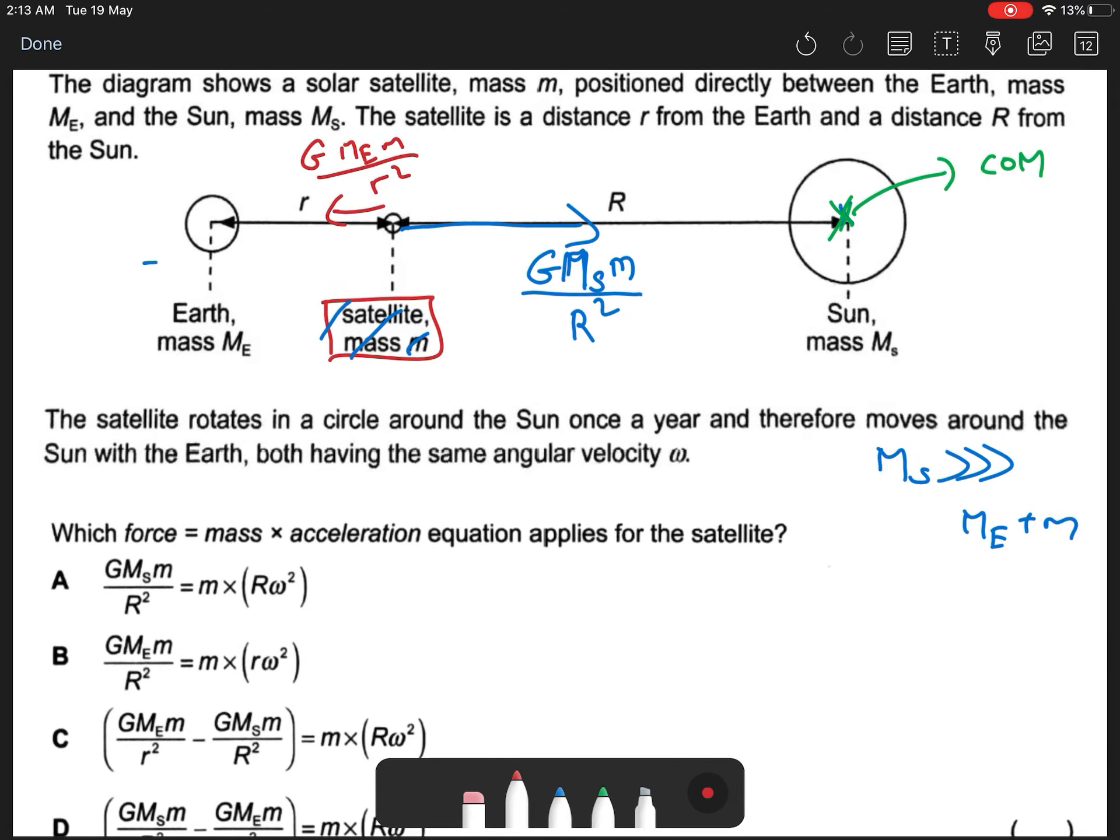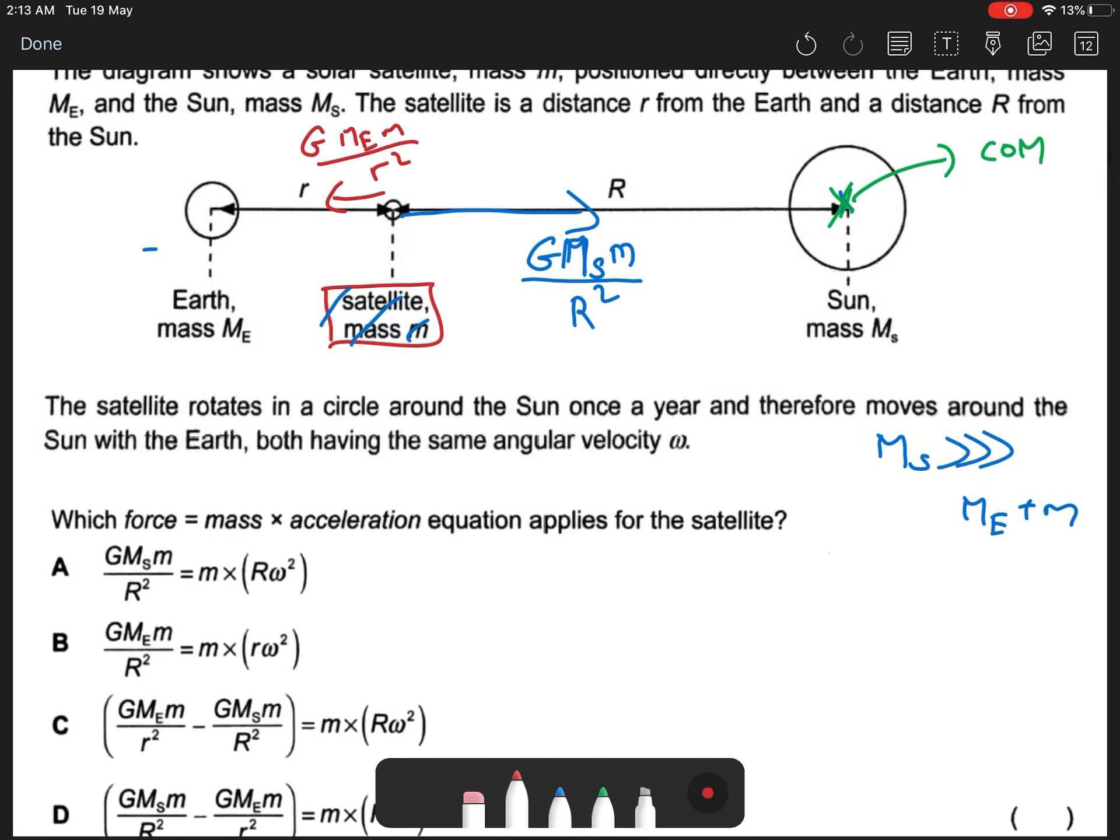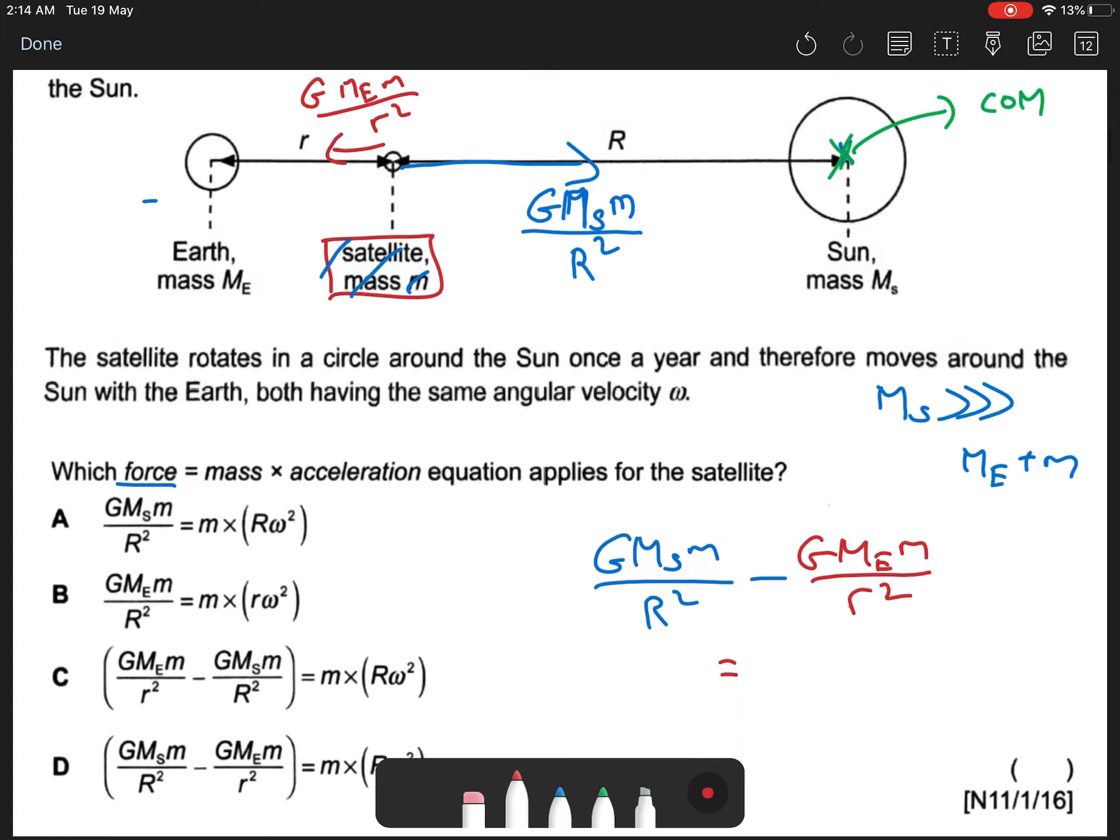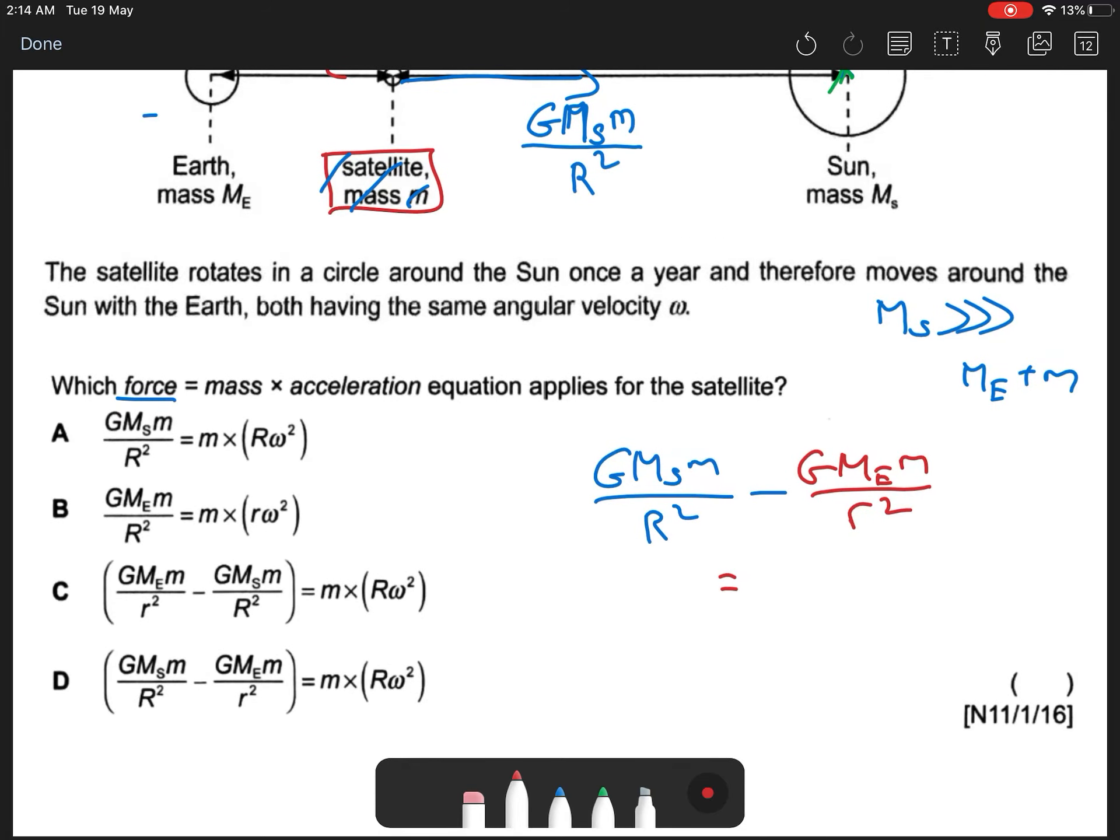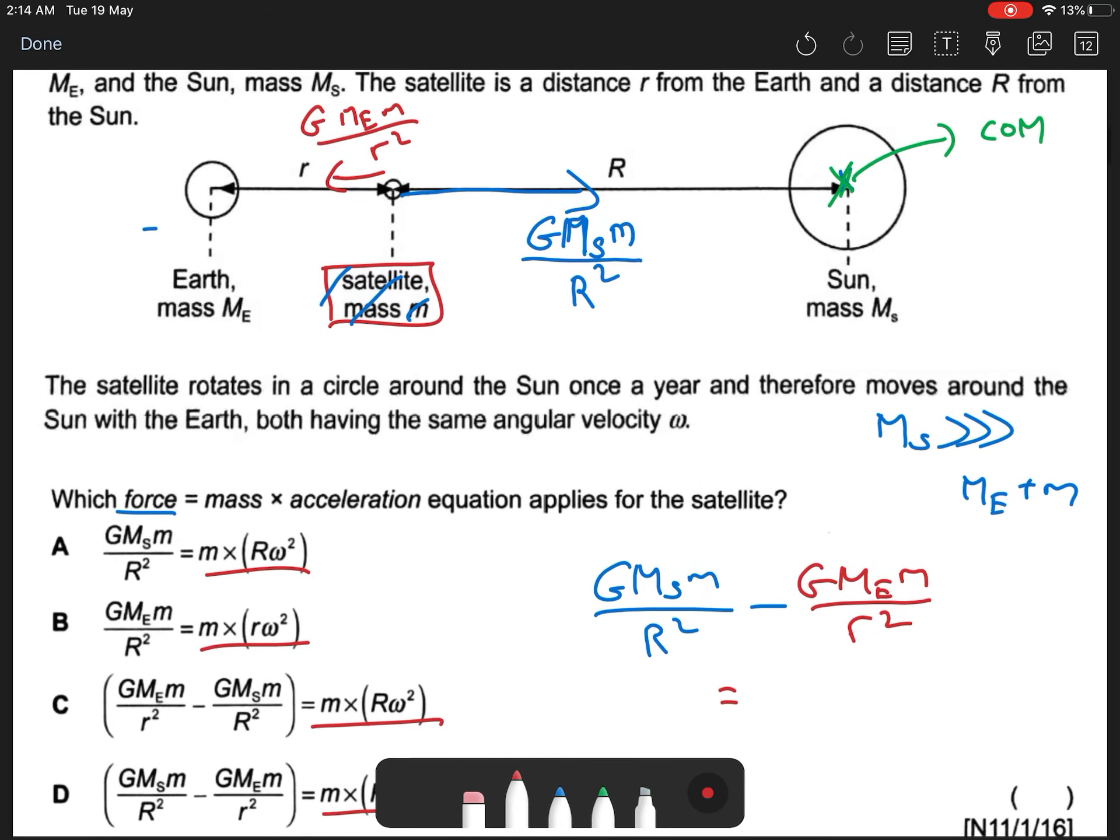Alright, so F equal to ma. Which equation applies? So my F is my resultant force. I can write my left hand side as GMₛm over R², minus my red force due to my Earth's gravitational force, GMₑm over r², equal to ma. So you can look at the equation on the right side, something to do with circular motion: mRω².